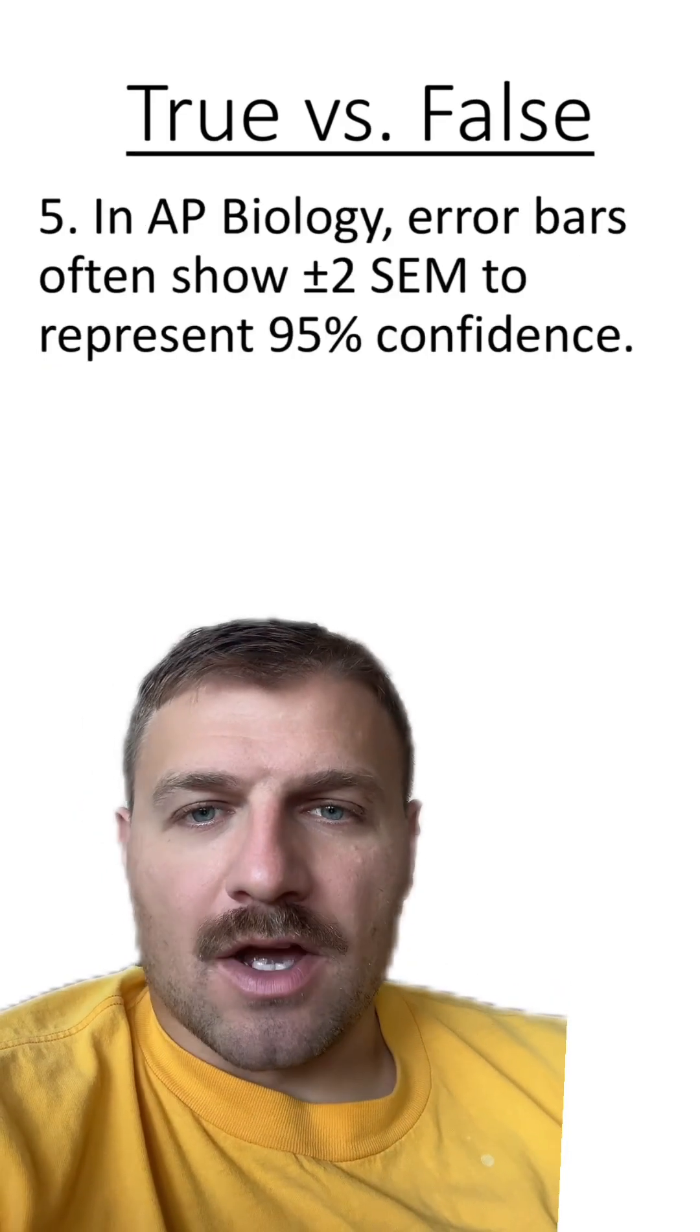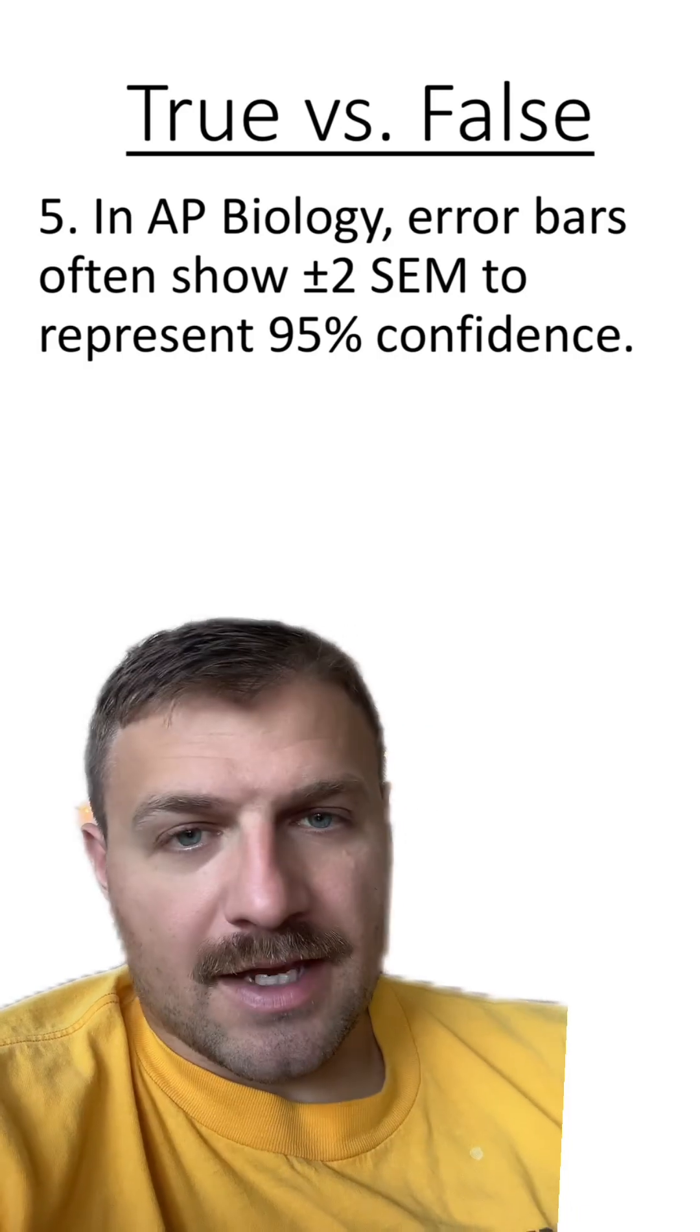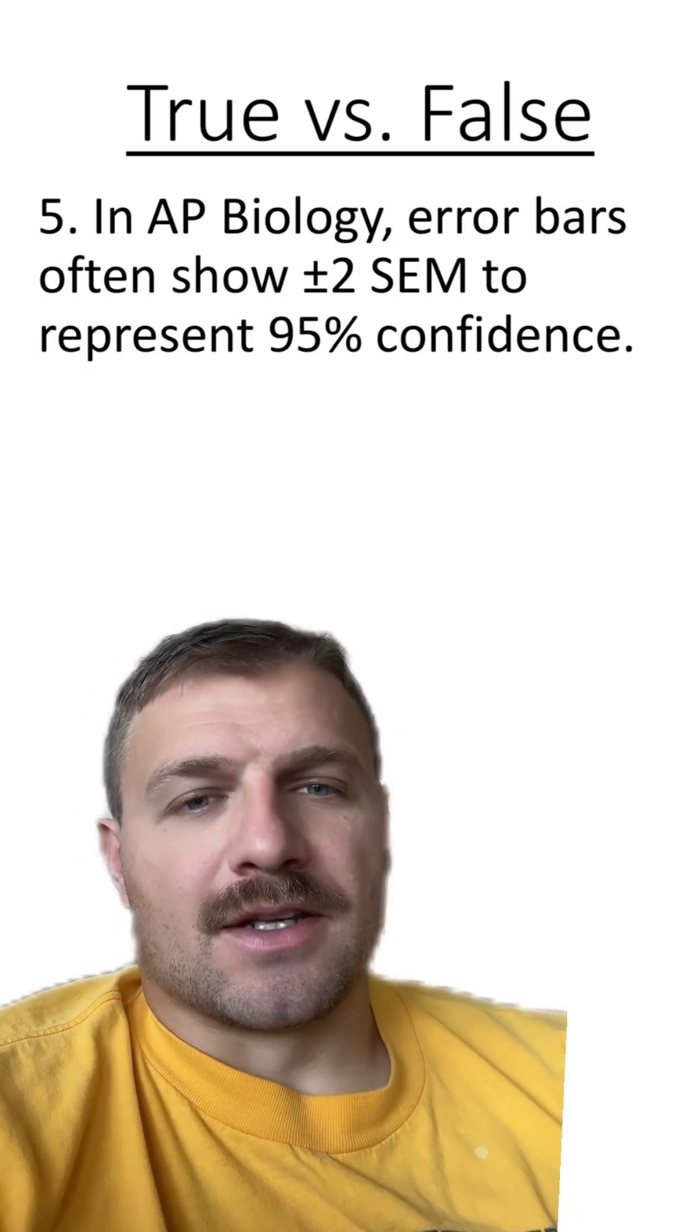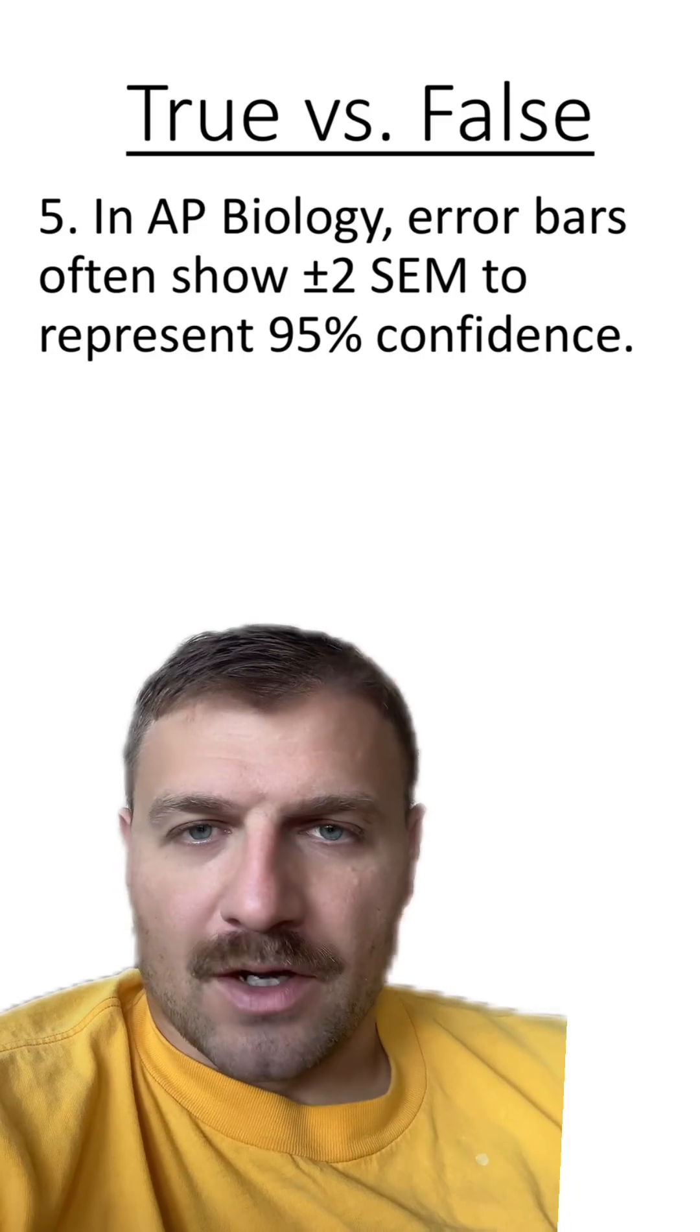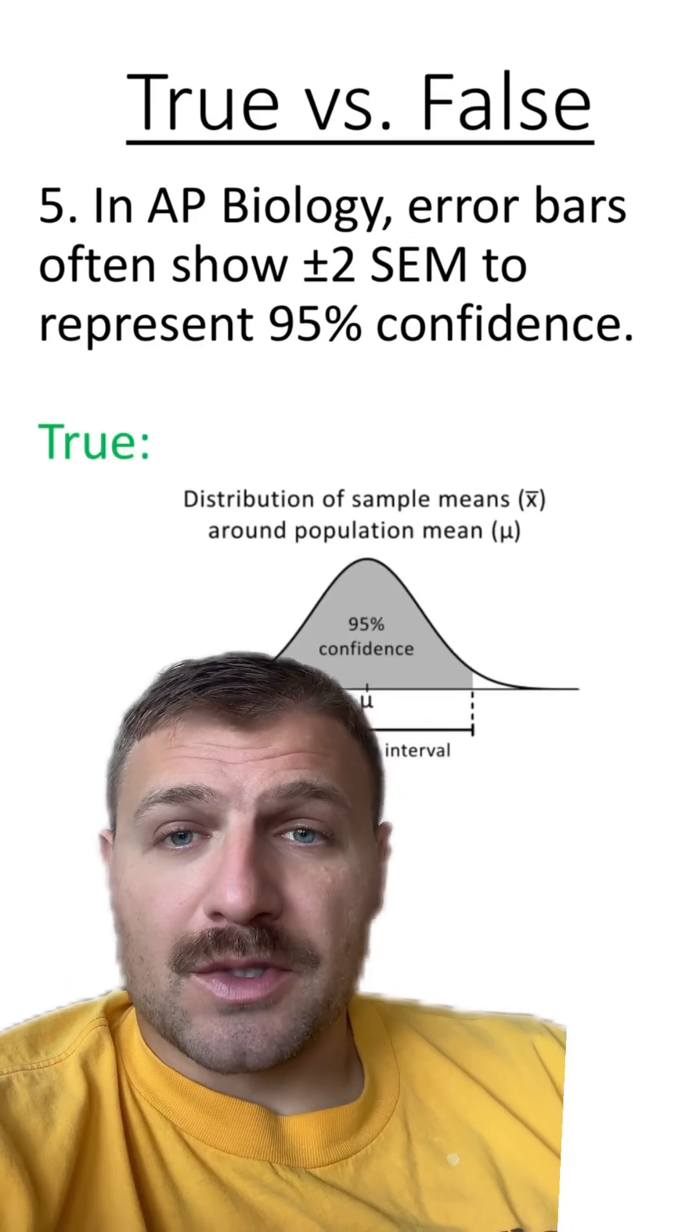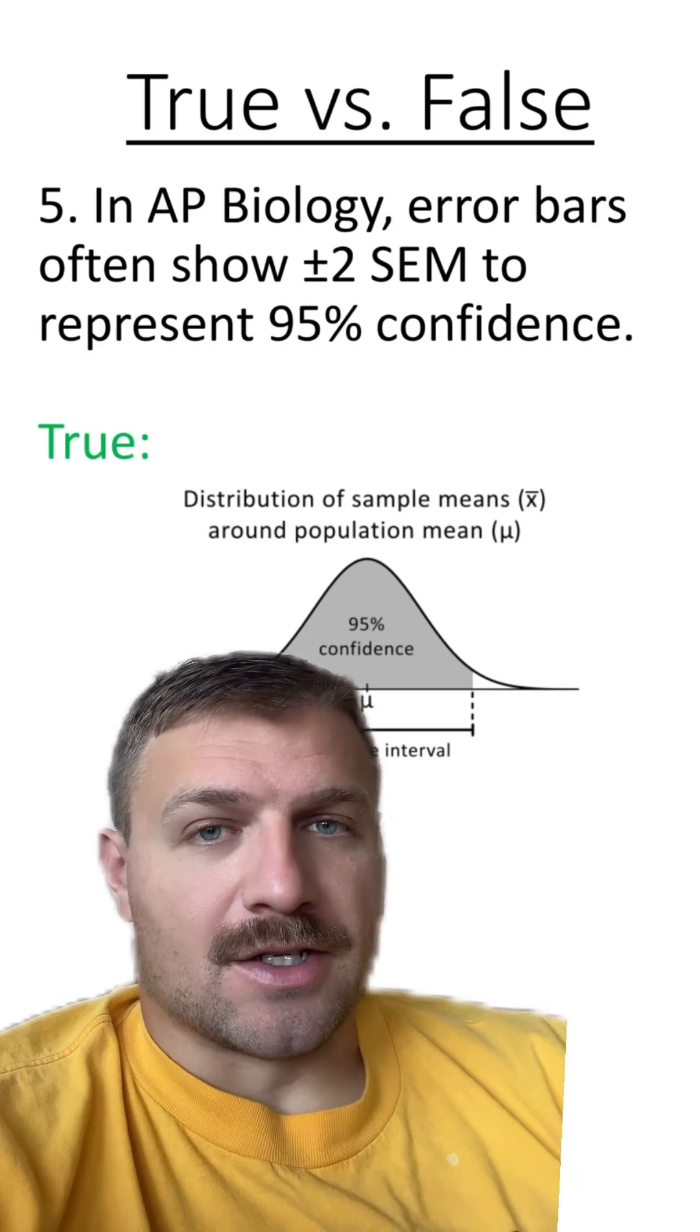Number five, in AP biology, error bars often show plus or minus two SEM to represent 95% confidence. Is this true or false? This is true. To show 95% confidence, we use plus or minus two standard errors of the mean.